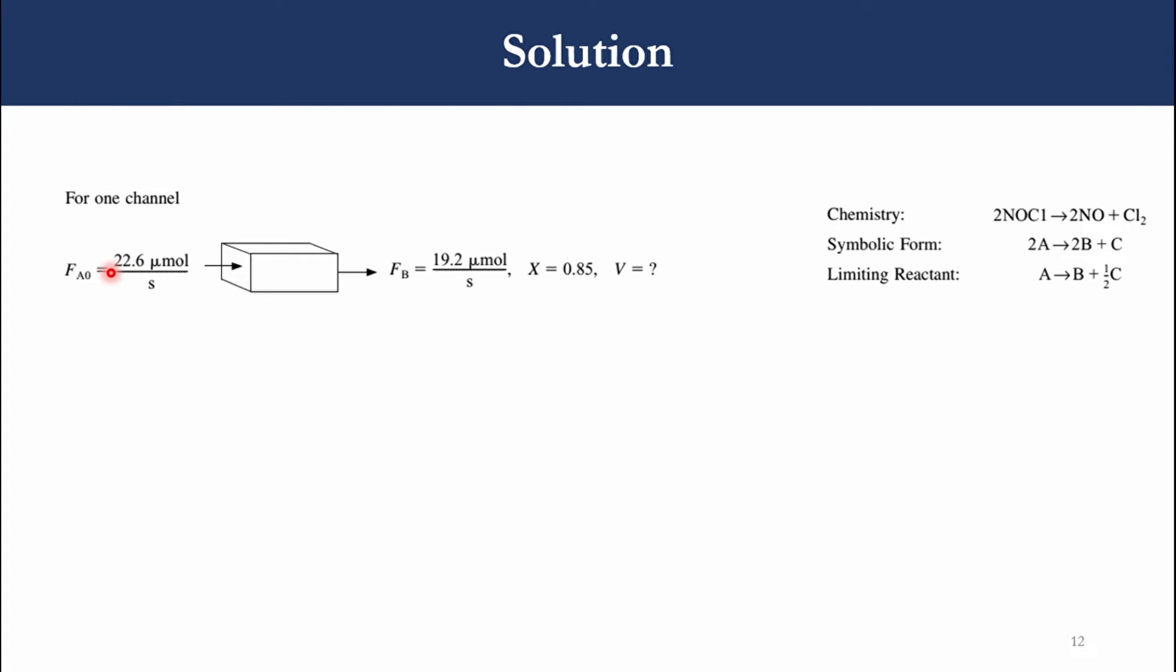For one channel, the initial feed flow rate is 22.6 and the final flow rate is 19.2 micromole per second with conversion as 85%, and we want to know the volume. Applying the chemistry: 2 NOCl goes to 2 NO plus Cl2. NOCl is represented by A, NO by B, and Cl2 by C. Dividing this equation by 2 to make the stoichiometric coefficient of limiting reactant as 1, we say A goes to B plus 1/2 C. First we will apply the mole balance. Mole balance on species A, B and C: DFA over DV equals RA, DFB over DV equals RB, and DFC over DV equals RC. We are considering it like a plug flow.